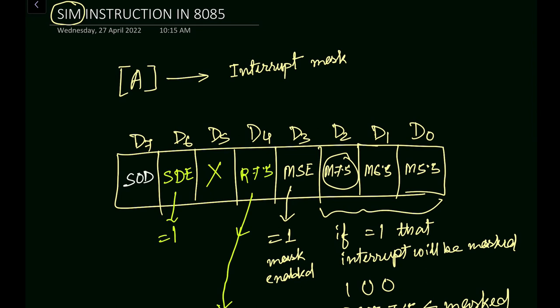So these 8 bits will be modified or programmed by the programmer by using the value of the accumulator. So as per the requirement, first of all, we have to modify the accumulator content. Then we have to execute this SIM instruction to mask and to enable, to disable, to do various operations as we have seen in this instruction. So depending on the values of the accumulator, various interrupt statuses will be modified.